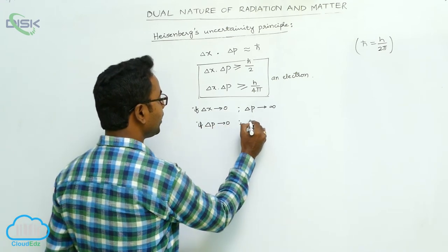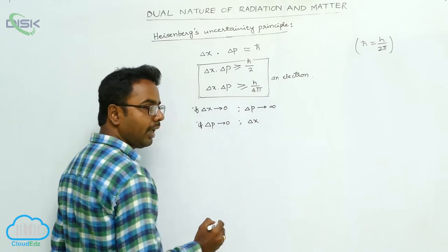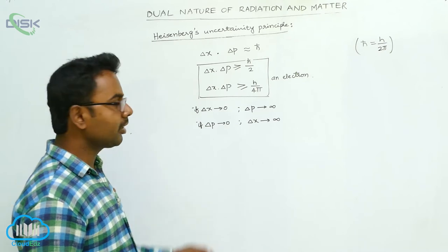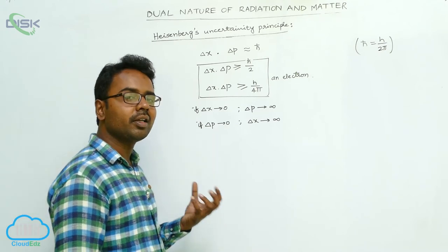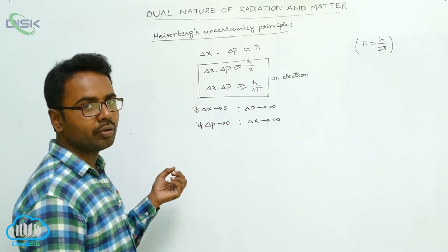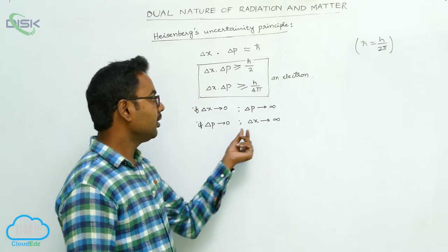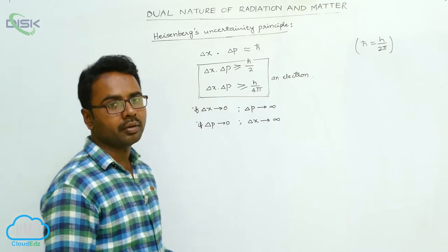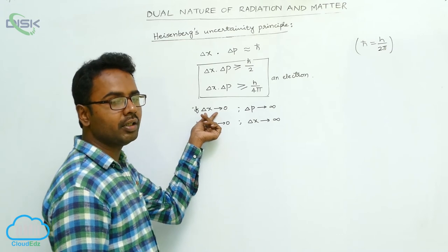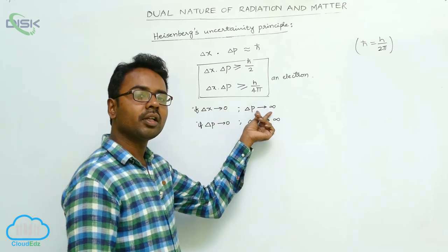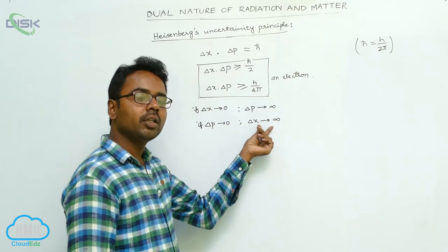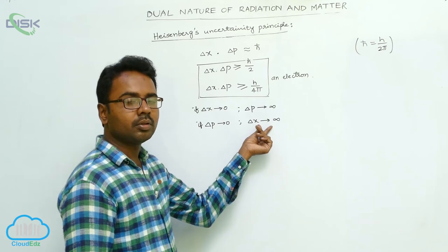Similarly, if delta p is approximately equal to 0, then delta x is also infinity. While we are going to measure the momentum exactly — delta p is 0 means uncertainty in the momentum is 0, meaning the momentum is measured accurately — then there should be infinite uncertainty in the position. If we measure the momentum exactly, there should be infinite uncertainty in the position, and if we measure the position exactly, there should be infinite uncertainty in the momentum.